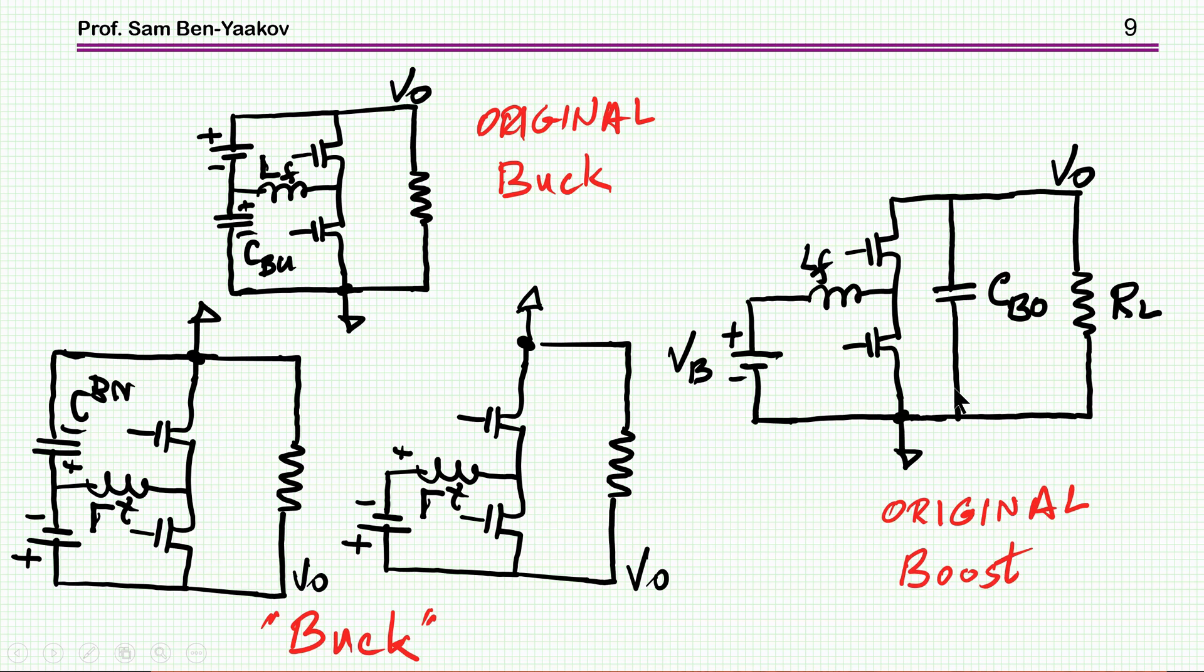The only difference is the fact that in the original boost, we had a capacitor here, while in the original buck, we had a capacitor here. Now the voltage of the capacitor is a bit different. The ripple will be a bit different. And there is also one major difference, which is important, and that is that in this case, the ripple is going to go through the battery.